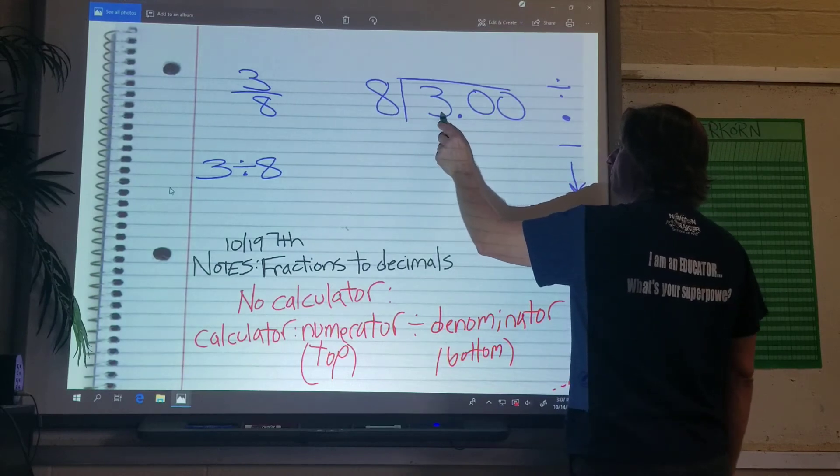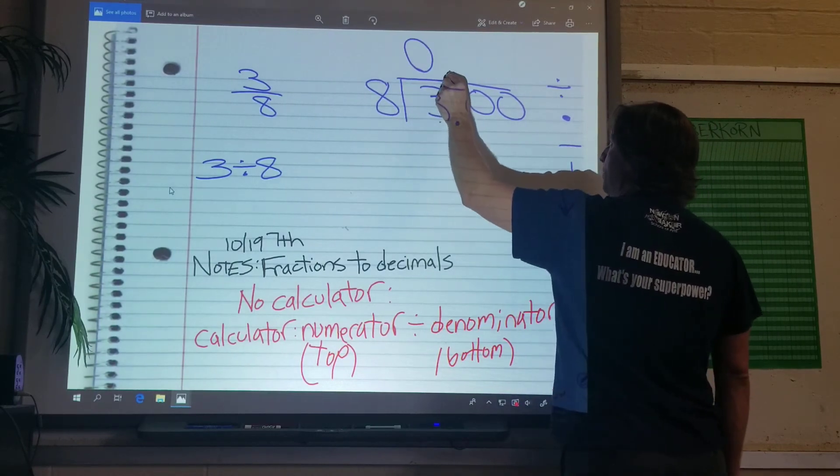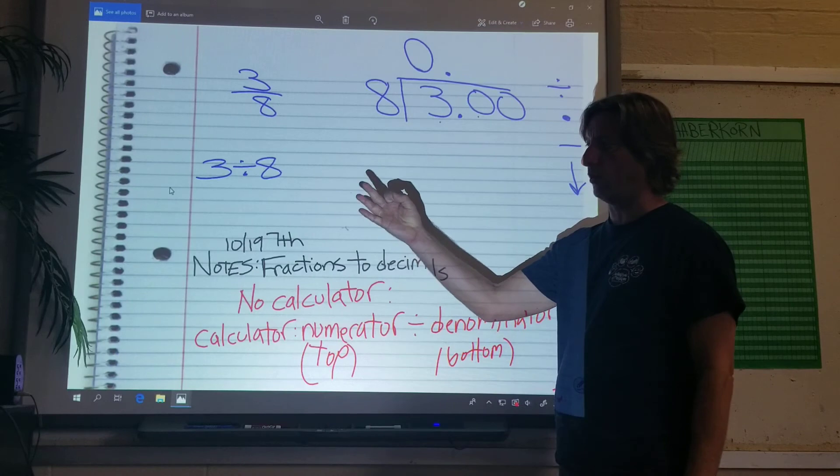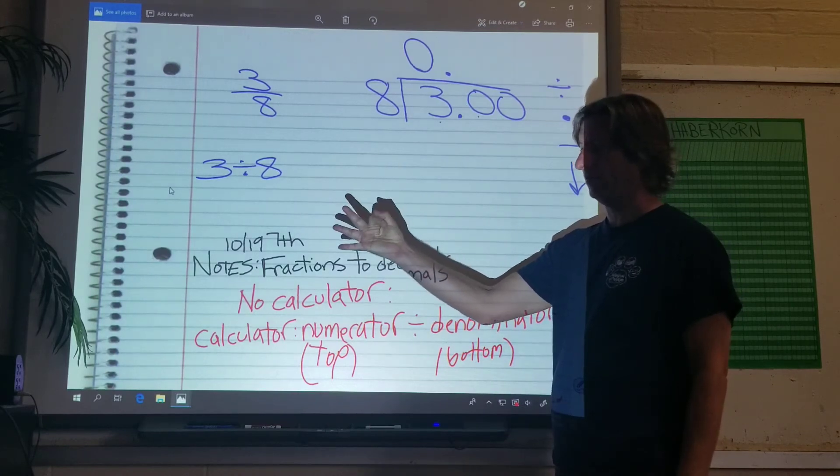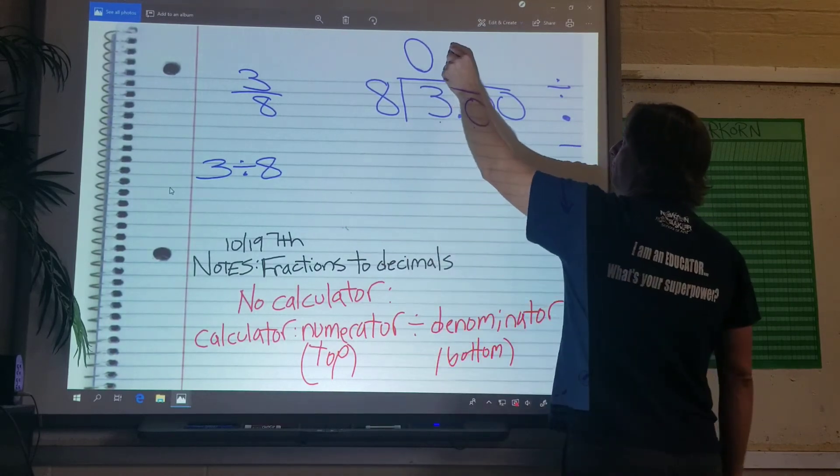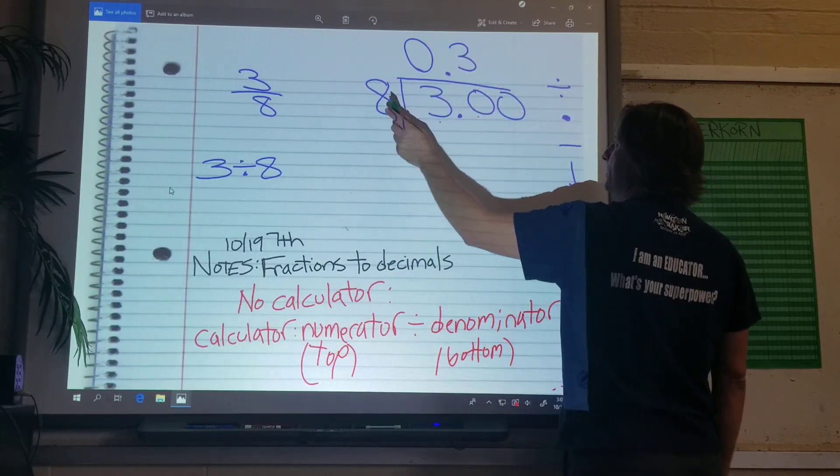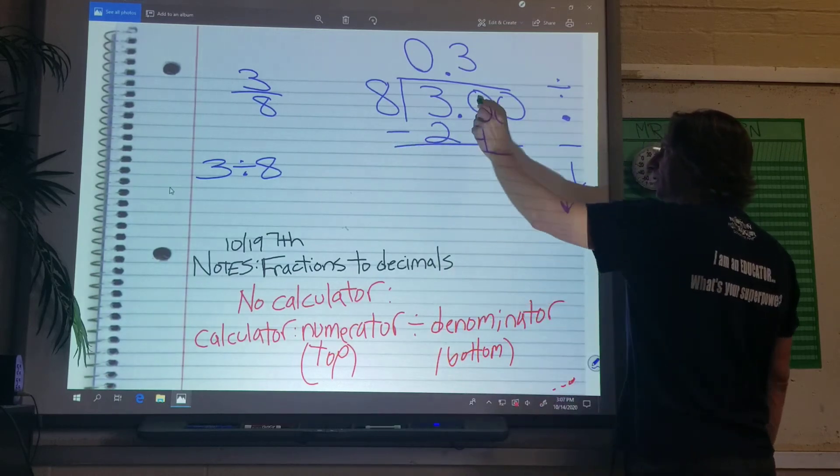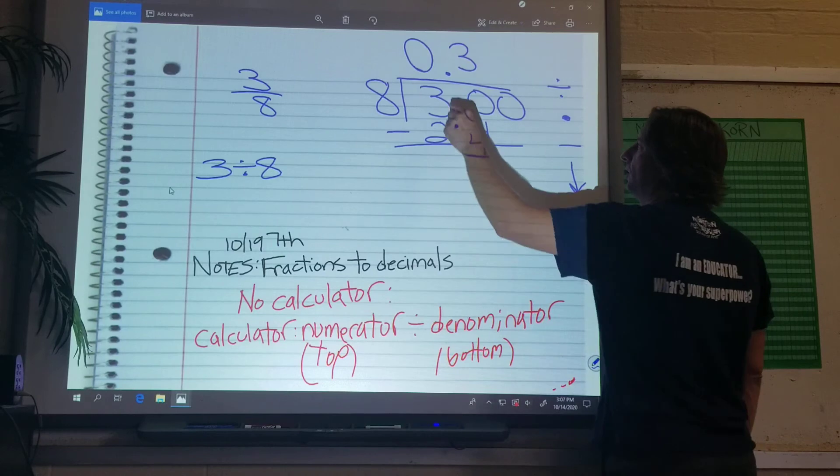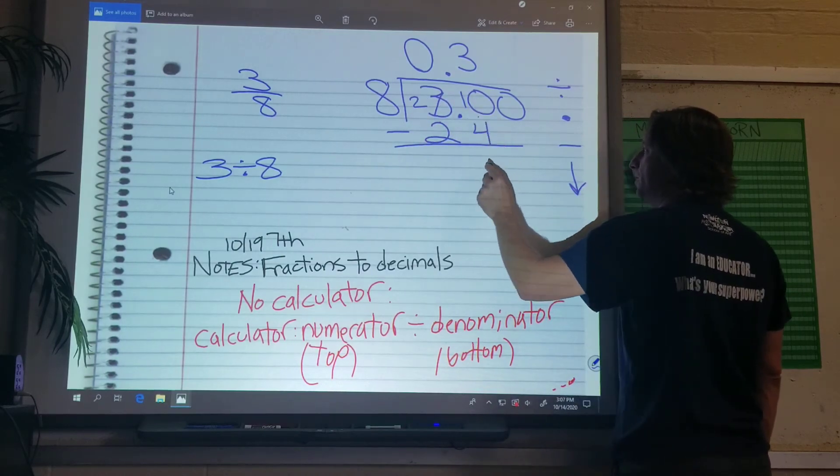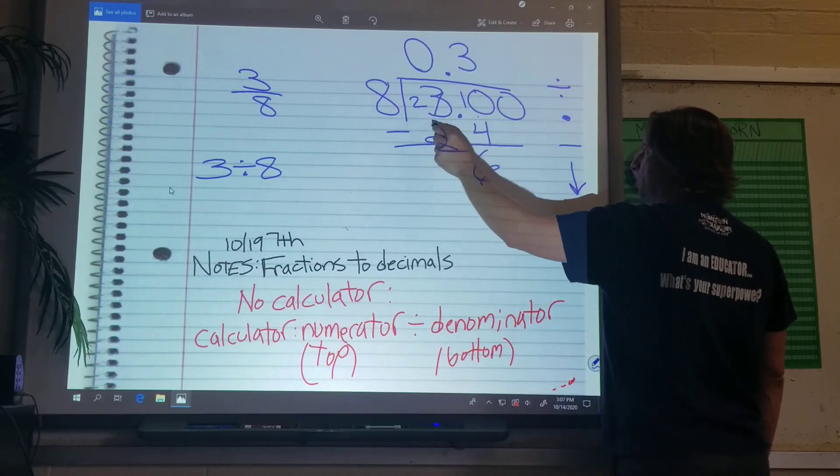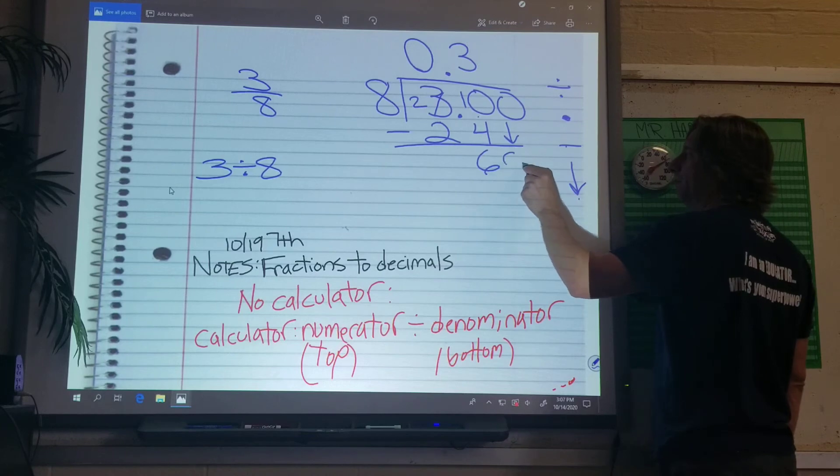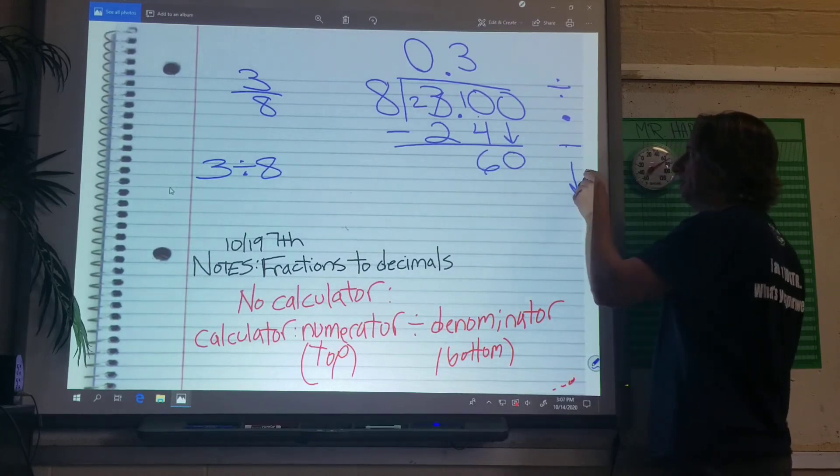Will eight go into three? No. Bring out my point. Will eight go into thirty? Yes. Eight, sixteen, twenty-four, thirty-two. That's too many. Three times. All right. Multiply. Three times eight is twenty-four. Subtract. Can I do zero minus four? No. I'm going to borrow. Ten minus four is six. Two minus two is nothing. So we did our subtract. I'm going to bring down the zero. Am I done yet? Nope. Back to the top.